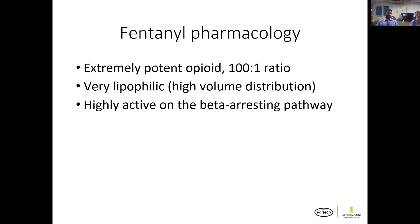A little bit of pharmacology. It's extremely potent — roughly one milligram of fentanyl equals 100 milligrams of morphine, which is the standard equivalence we use, though that can range from 50:1 up to close to 200:1. It is a very lipophilic medication, meaning it seeds out into fat tissues, leading to a high volume of distribution. It's also highly active on what's called the beta-arrestin pathway, which is believed to be primarily responsible for respiratory depression in patients — making it incredibly dangerous.